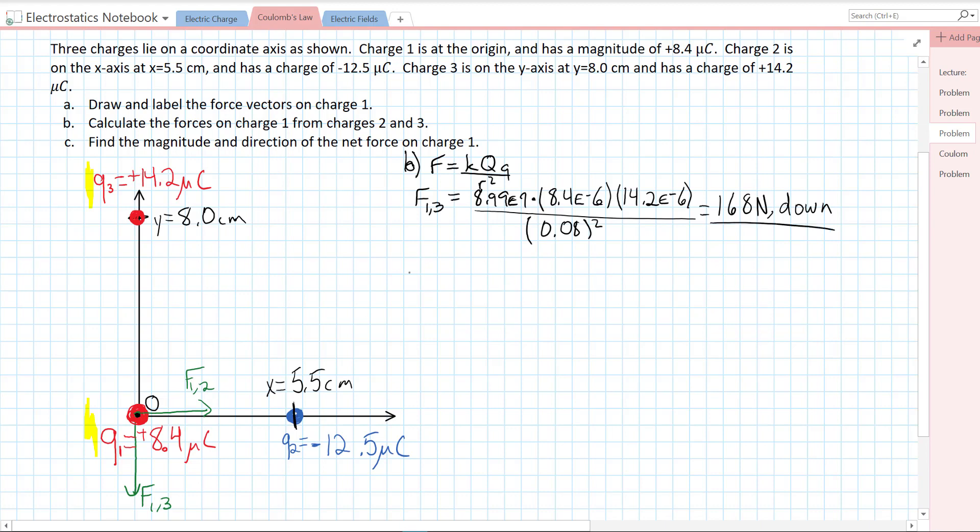We get our force on one from two. K is 8.99 times 10 to the 9. Q1 is still 8.4 times 10 to the minus 6 Coulombs. And Q2 now is negative 12.5 times 10 to the minus 6 Coulombs. The distance between Q1 and Q2, well, Q1 is at zero, Q2 is at 5.5 centimeters. So R is 5.5 centimeters, or 0.055 meters.